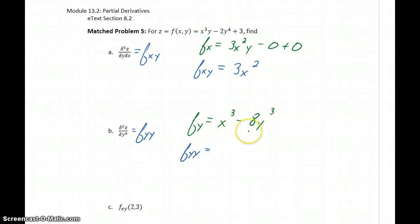x cubed becomes 0, and minus 8y cubed becomes minus 24y squared.